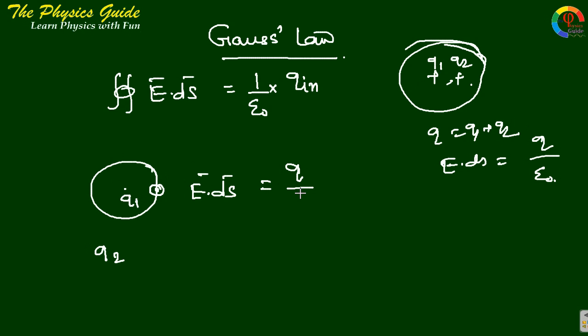We use only q by epsilon naught, where q is the charge inside the surface. Charges outside the surface don't contribute. This is the basic principle of Gauss's law.